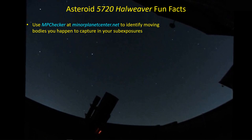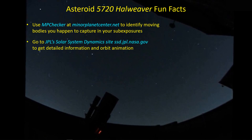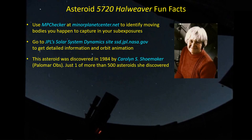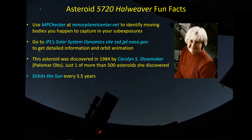Now how about a couple of Asteroid 5720 Hal Weaver fun facts. You can use MP Checker at minorplanetcenter.net to identify bodies that you happen to come across in your sub-exposures — it's a very handy, very quick resource once you have the basic observation information. And once you get the name of the object, you can go over to JPL's Solar System Dynamics site and get really detailed information about the object and its orbit, even a 3D animated view along with nearby planets. This asteroid was discovered back in 1984 by Carolyn Shoemaker — just one of more than 500 asteroids she is credited with discovering. It orbits the sun about every three and a half years and is only four kilometers — about two and a half miles — across. It was about 118 million kilometers from Earth when some of us observed it on January 29, 2022.